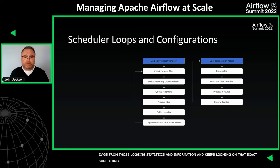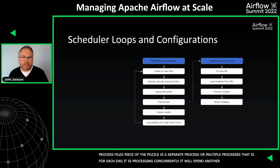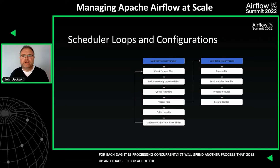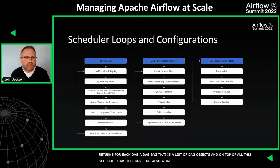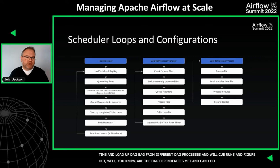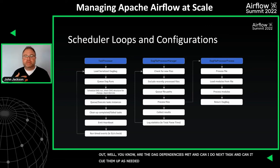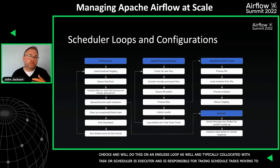The file-processing piece is a totally separate process — or multiple processes. For each DAG it's processing concurrently, it spins up another process that loads the file, loads all the modules, figures out which modules are DAGs, and returns a DAG bag — just a list of DAG objects. On top of that, the scheduler also has to figure out what tasks are supposed to be scheduled, queue all the runs, check if DAG dependencies are met, run cleanup routines, emit metrics, do SLA checks — all on an endless loop. Co-located with the scheduler is also the executor, which takes scheduled tasks, moves them to queued, and monitors results from workers.